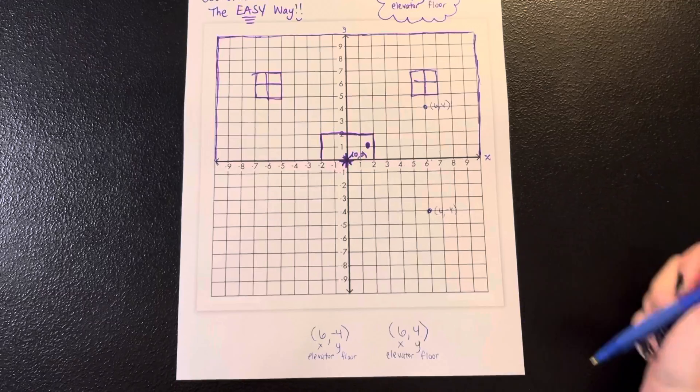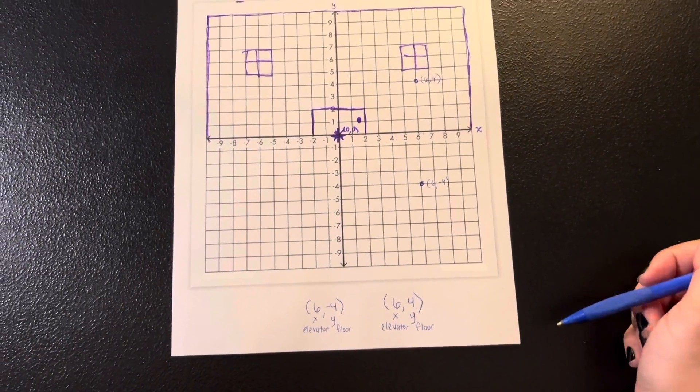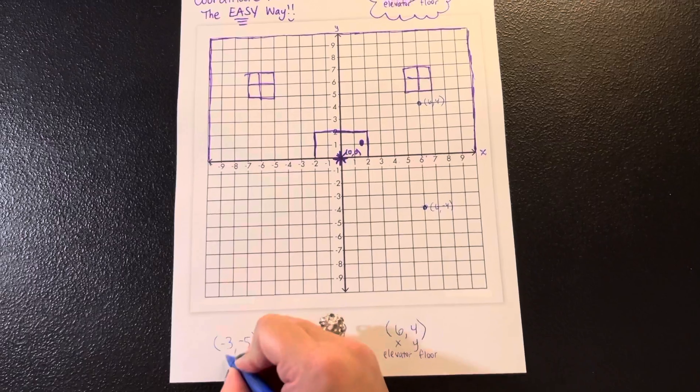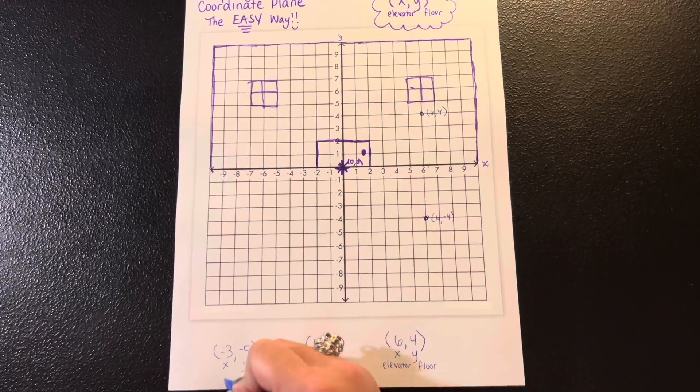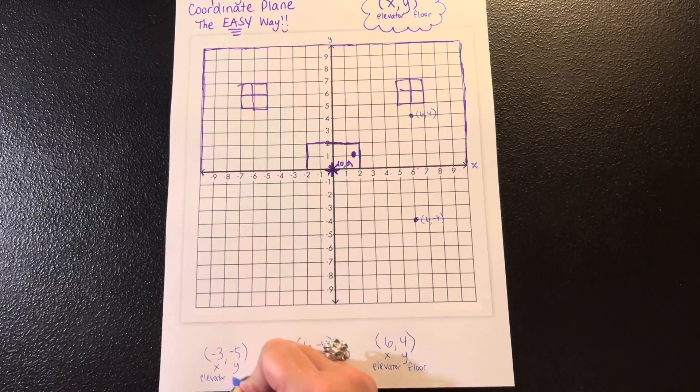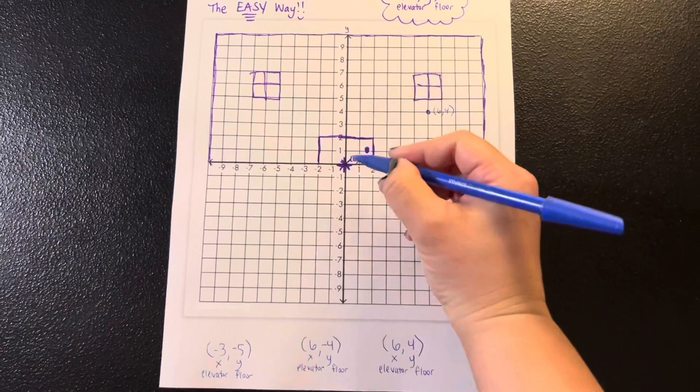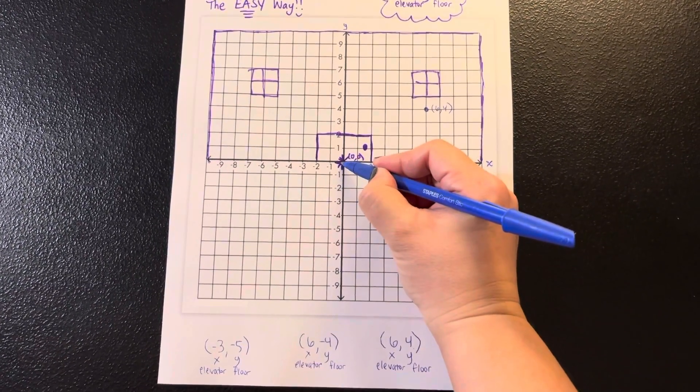And the same applies to the quadrants to the left. So if I wanted to do an example, one more, negative three, negative five. I know I have my X axis, my Y axis. I think elevator, floor. So again, I walk in at my doorway, my origin.